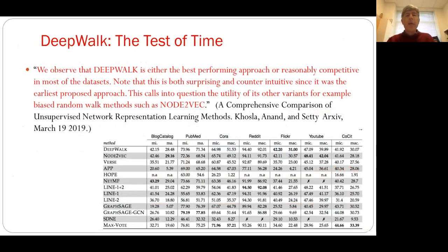That said, the DeepWalk technique — even though it was really one of the first graph embedding methods — on many classification tasks, it tends to work quite competitively, or better than many methods that came later. A quote from a paper I like tells us that for classification tasks, DeepWalk doesn't work quite as well on link prediction, but for classification it remains competitive.